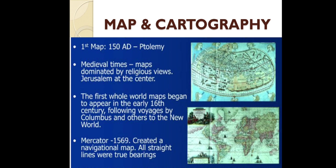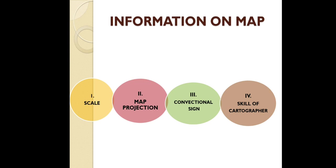During medieval times, maps were dominated by religious views, so Jerusalem was placed at the center of the map. The first whole world map appeared in the early 16th century when the voyages began during Columbus and others to the new world. In 1569, Mercator created a navigational map where all straight lines were true bearings.